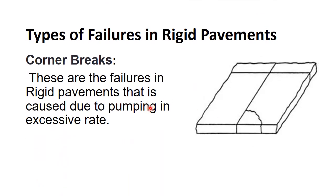Corner break failures in rigid pavement are caused by pumping at an excessive rate. When pumping removes the underlying support, corner cracks are created. The remedy for corner cracks is full slab replacement or full depth repair.